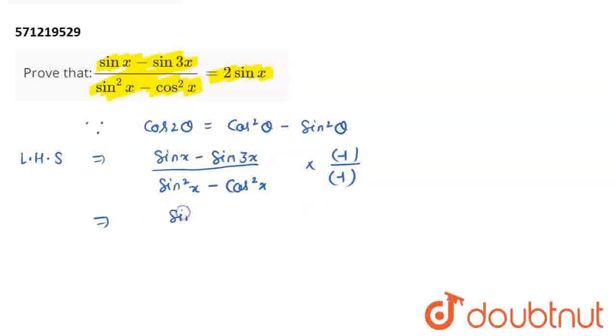So, it becomes sin of 3x, negative terms becomes positive and the positive becomes negative, minus sin x whole divided by cos square x minus sin square x. Now, I am going to use this above written formula and I can write this expression as sin 3x minus sin x divided by cos of 2x.